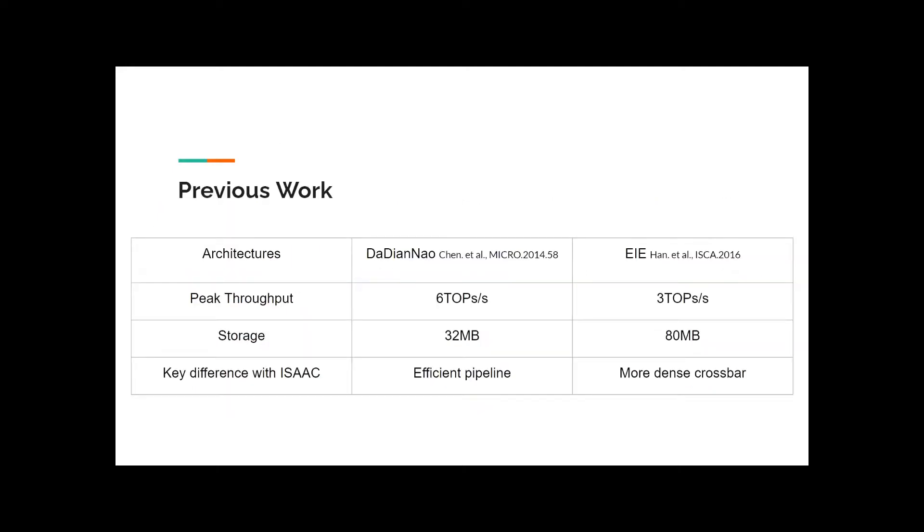Comparing with previous work, DaDianNao in 2014 and EIE in 2016, you can see that ISAC-CE has significant advantage in terms of peak throughput rate and the storage. That is because of its efficient pipelining and distributed computation network, and also the more dense and fast memristive crossbar.